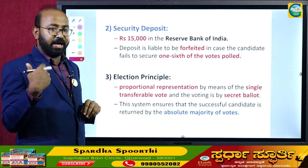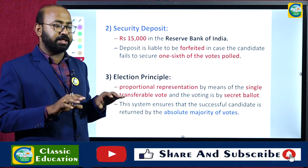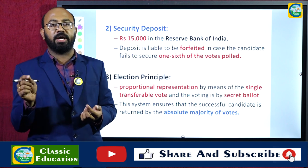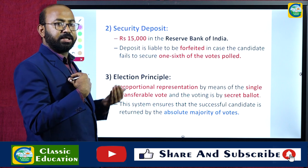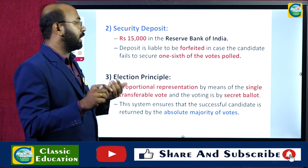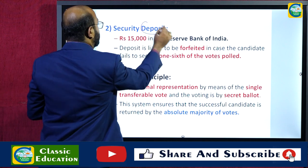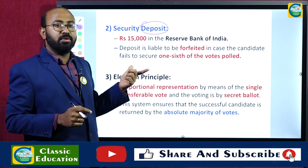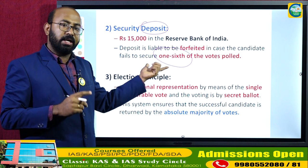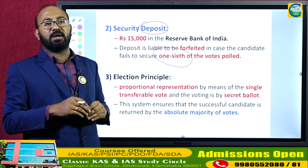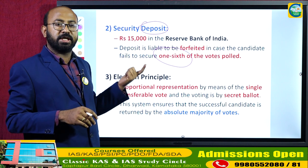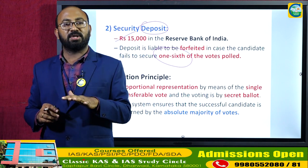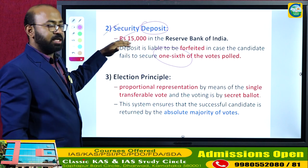The candidate standing for the election must deposit 15,000 rupees in the Reserve Bank of India as a security deposit. This amount will be returned only if the candidate secures more than one-sixth of the total valid votes polled — whether he wins or loses. Otherwise, the 15,000 rupees will be forfeited by the Election Commission of India.